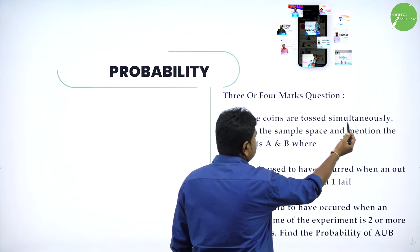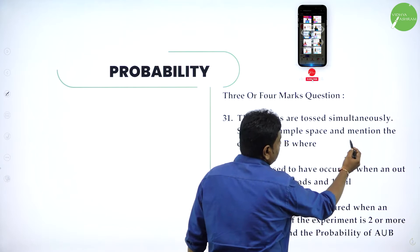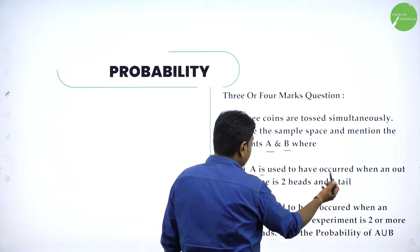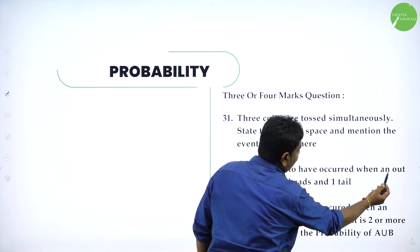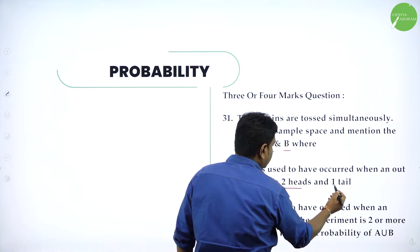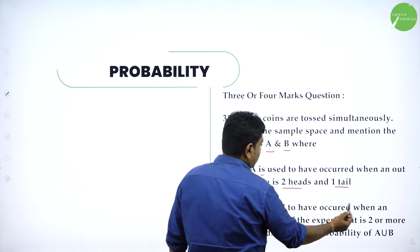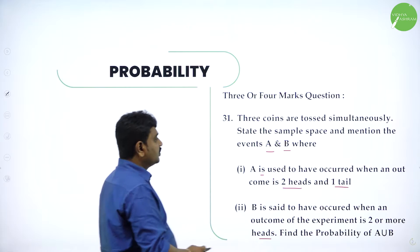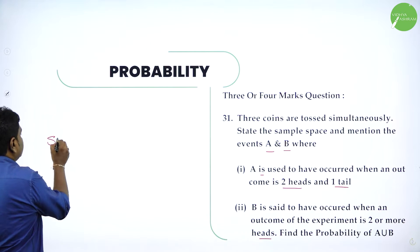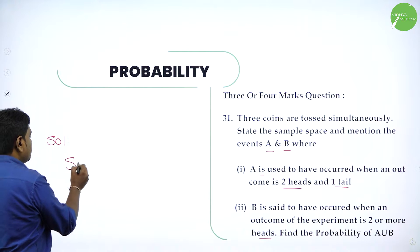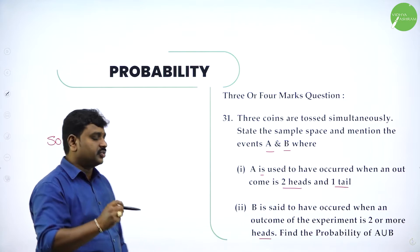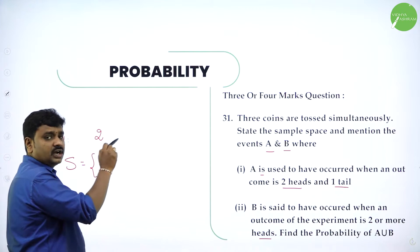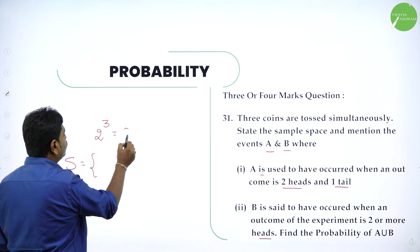3 coins are tossed simultaneously. State the sample space and mention the events A and B, where A is said to have occurred when an outcome is 2 heads and a tail. B is said to have occurred when an outcome is 2 or more heads. So now, how many coins are tossed? 3 coins are tossed. Sample space means the set of all outcomes. When you toss 3 coins, for 1 coin toss there are 2 outputs — head or tail — so for 3 coins, if you toss, 2 cubed equals 8 outputs.